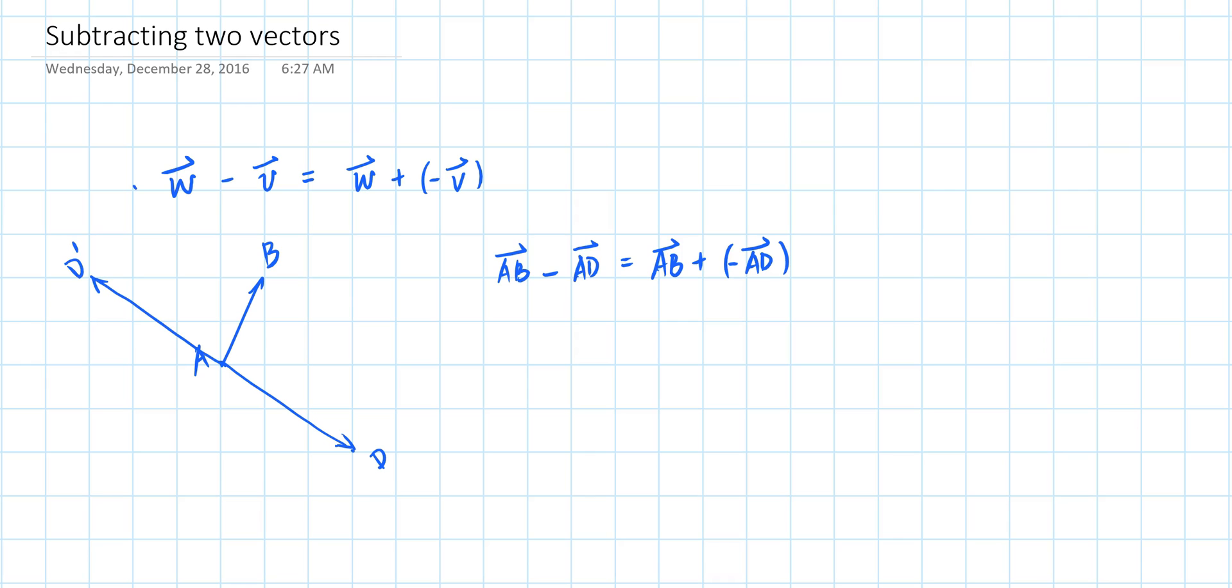Applying the parallelogram rule, we find that AB minus AD is this vector AC. It is also true that the negative of vector AD is equivalent to vector DA. So applying the triangle rule, we know vector DA plus vector AB is equal to vector DB, which is this vector.